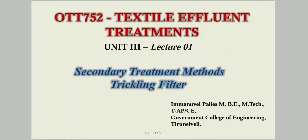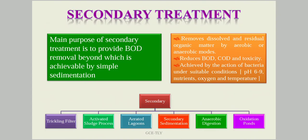The main purpose of secondary treatment is to remove the BOD — that is, all the organic content present in the wastewater coming from the primary clarifier. This removes BOD, COD, and toxicity, which is achieved by the action of bacteria under a pH range of 6 to 9 and under suitable nutrients, oxygen, and temperature.